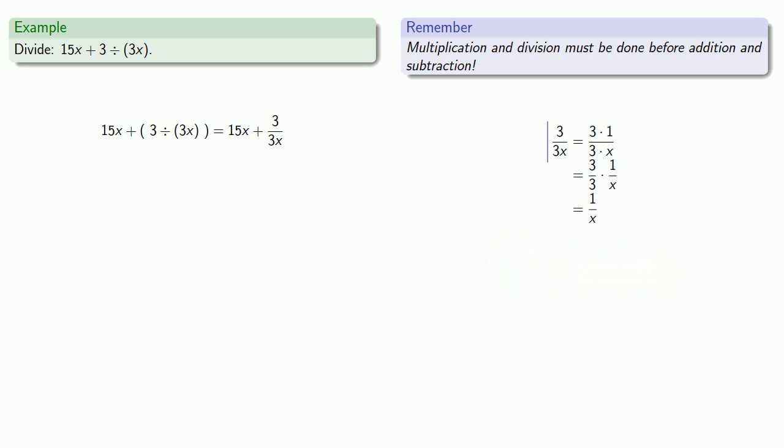Equals means replaceable. So instead of 3 over 3x, I can write 1 over x. And that's as far as we can go in simplifying this expression.